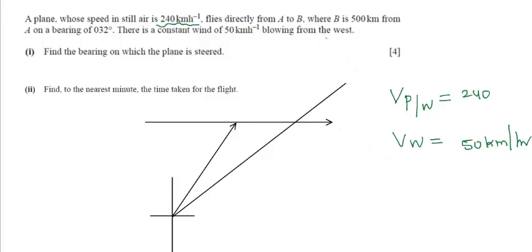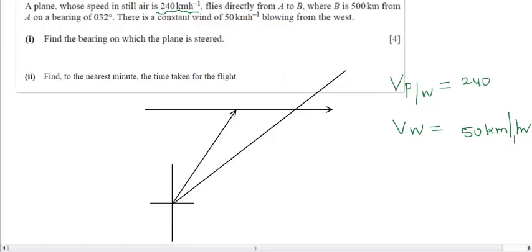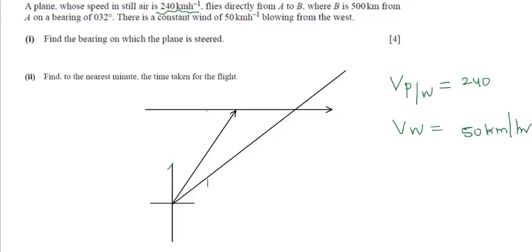The distance from A to B is 500 and it makes a bearing of 32 degrees. So let's take this is the north line. The flight is moving from A to B. The distance is 500 and this represents the velocity of the plane, V_P given W, which is 240.